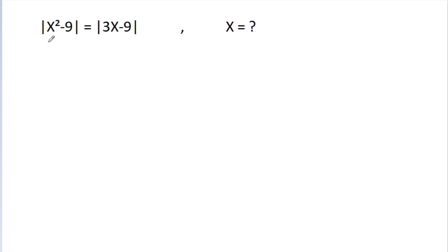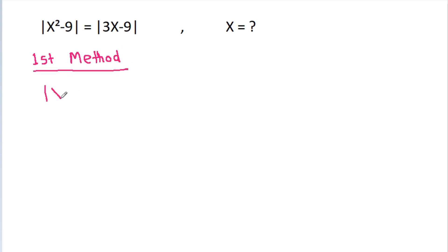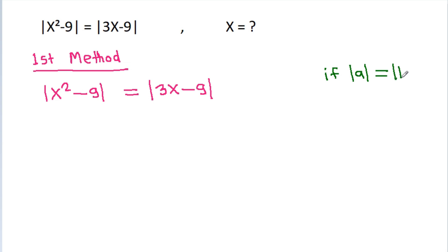In this video, we have given that |x² - 9| = |3x - 9|, then x is equal to what? First method: we have |x² - 9| = |3x - 9|, and if |a| = |b|, then a = ±b.